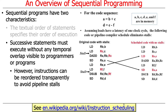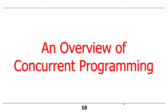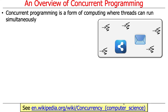That's sequential programming — most likely what you've done through much of your work at Vanderbilt. So what is concurrent programming? Concurrent programming is a form of computing where threads can run simultaneously. There are different definitions of simultaneous: sometimes physically simultaneous, meaning really running at the same time on different cores in a multi-core processor; sometimes logically simultaneous, meaning one core where threads take turns running.